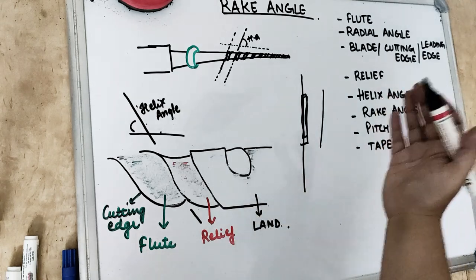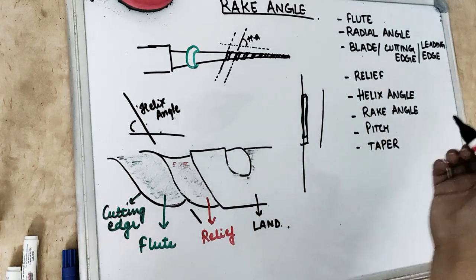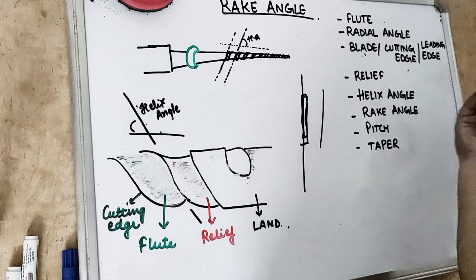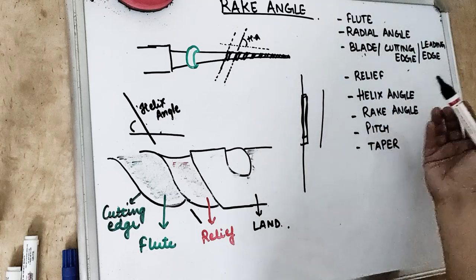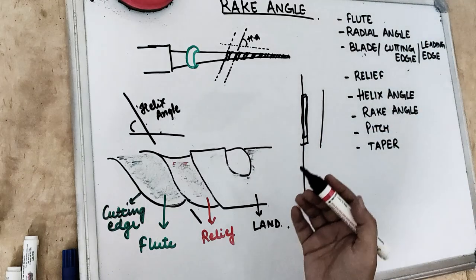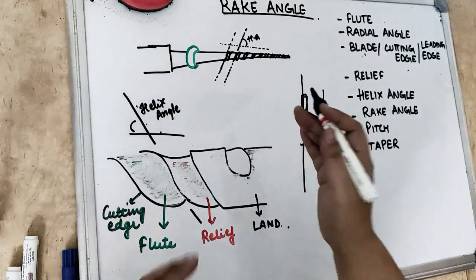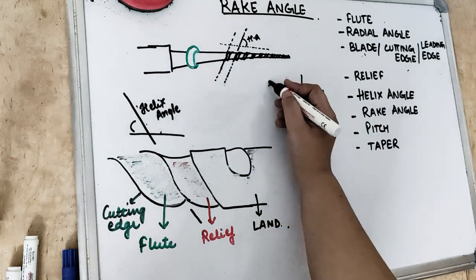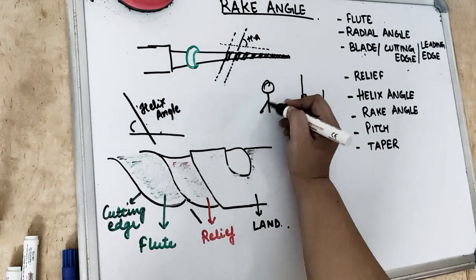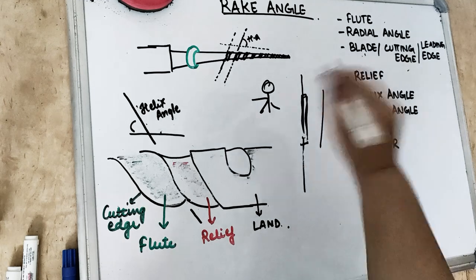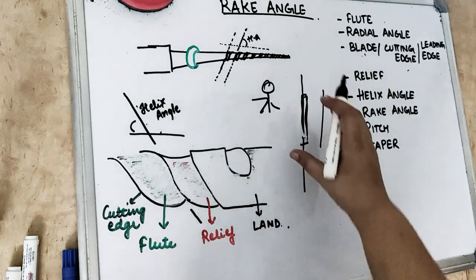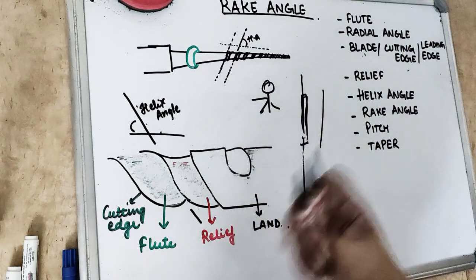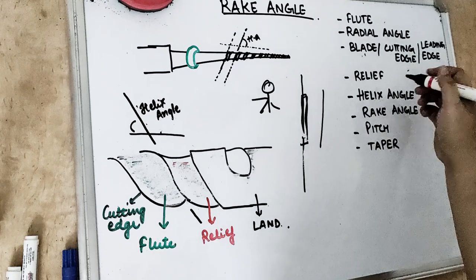The blade is the working surface, also the cutting edge, and also the leading edge. Leading edge means the one which is facing the front — the warrior who is fighting at the front. So the blade is that part which is doing all the cutting job.